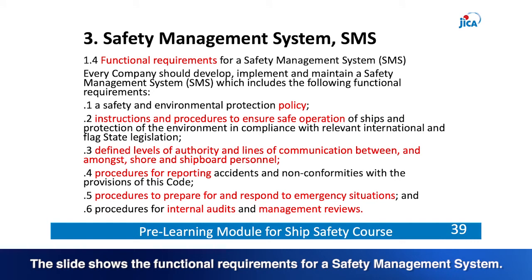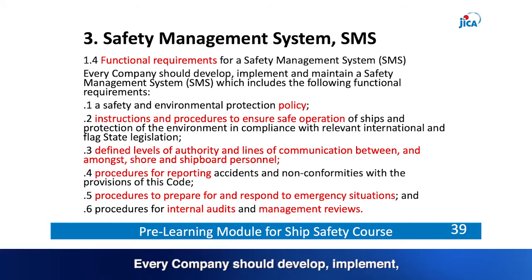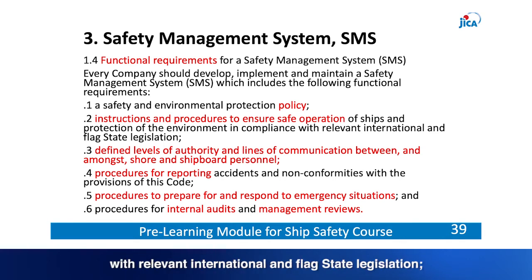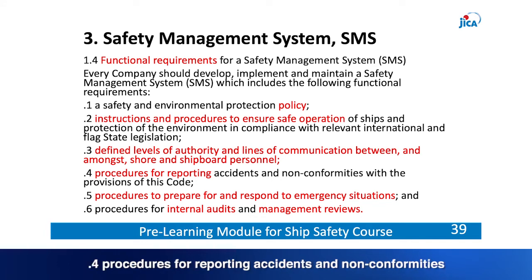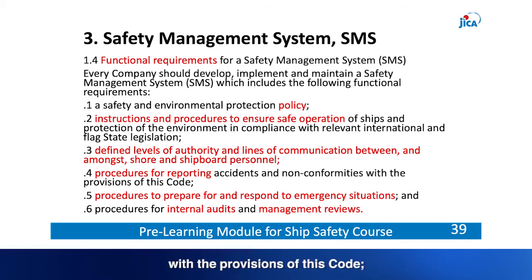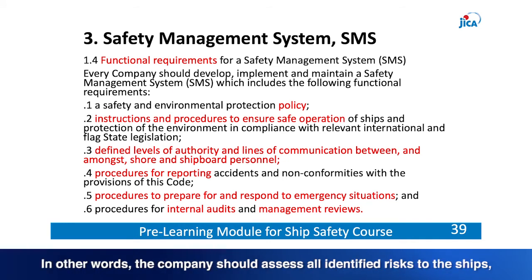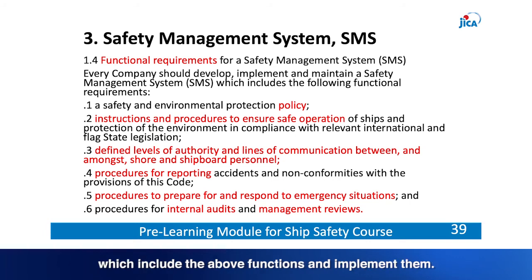The slide shows the functional requirements for a Safety Management System. Every company should develop, implement and maintain an SMS which includes: 1. A safety and environmental protection policy. 2. Instructions and procedures to ensure safe operation and environmental protection. 3. Defined levels of authority and lines of communication between shore and shipboard personnel. 4. Procedures for reporting accidents and non-conformities. 5. Procedures to prepare for and respond to emergency situations. 6. Procedures for internal audits and management reviews. The company should assess all identified risks and develop manuals covering these functions.